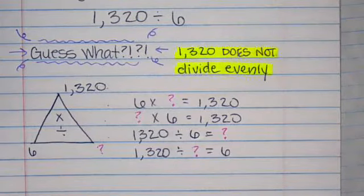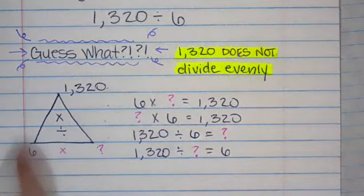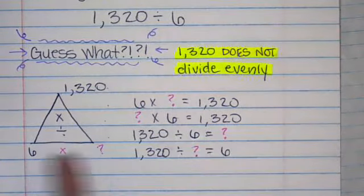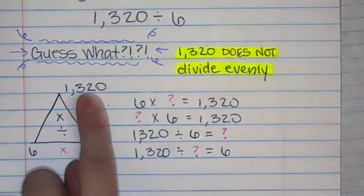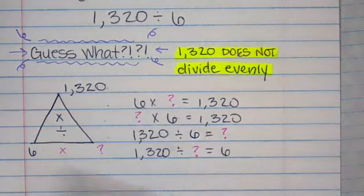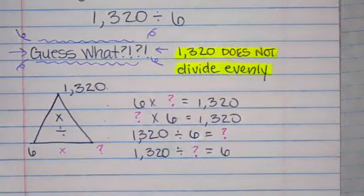Now that I have made my two multiplication problems, six times some number equals 1,320. You could flip these around no matter what the order. And then my two division problems, 1,320 divided by six would be equaling question mark or 1,320 divided by question mark would equal six.